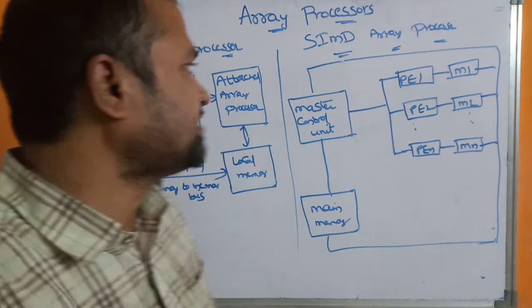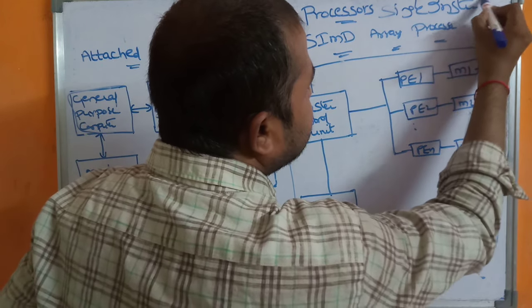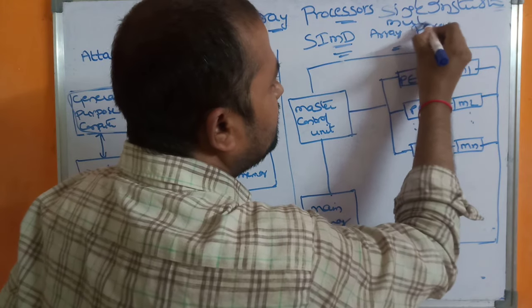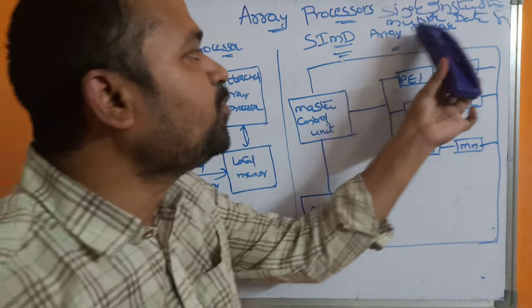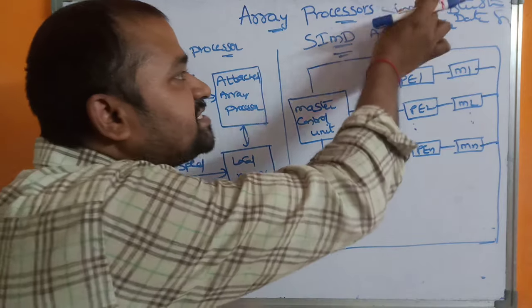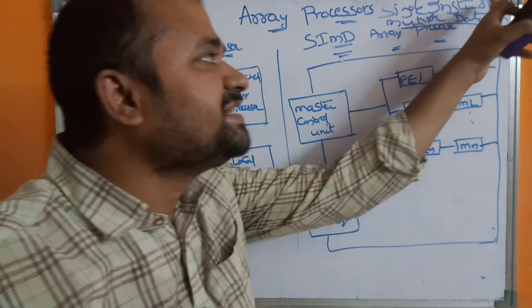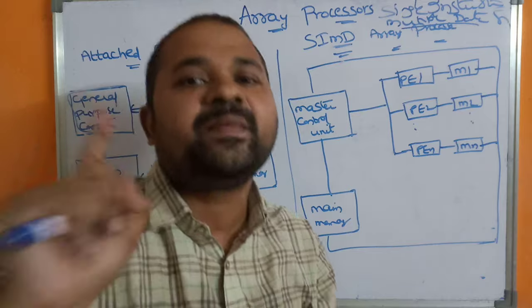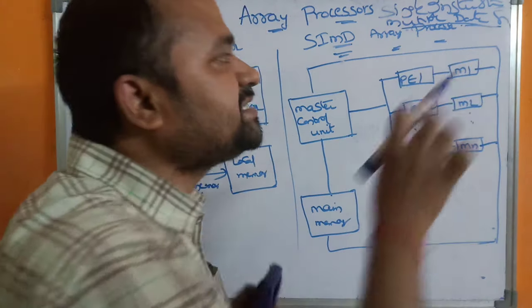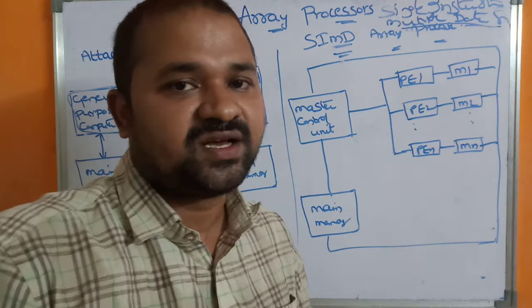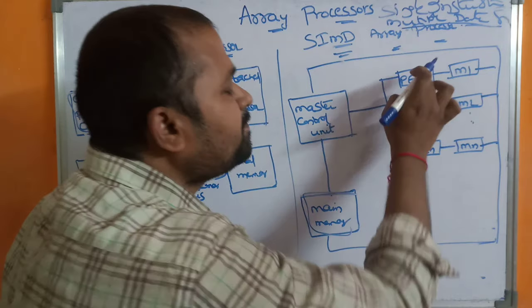Now let us see about the SIMD array processor. SIMD stands for Single Instruction stream, Multiple Data stream. That means instructions are always stored in main memory — single instruction stream means we have only a single main memory where all instructions are stored. Multiple data stream means the processor can execute those instructions across multiple processors. So SIMD stands for a single main memory but multiple processors.